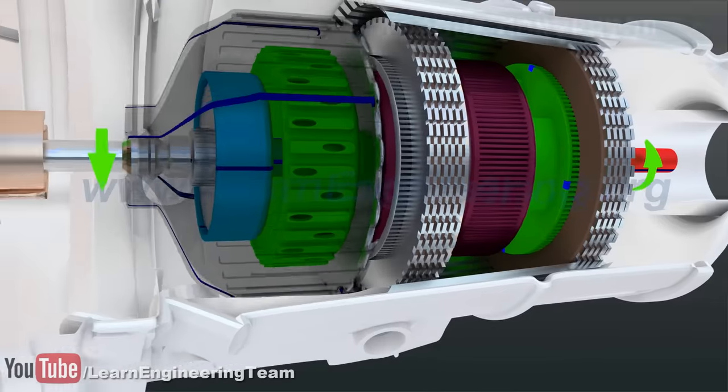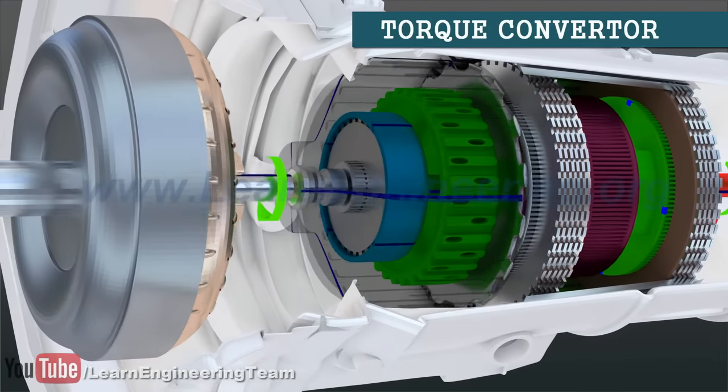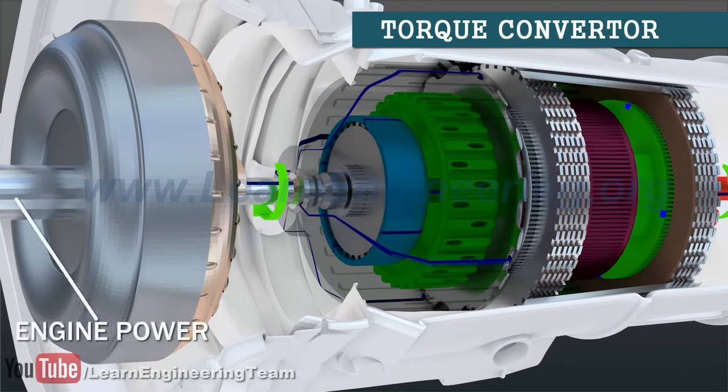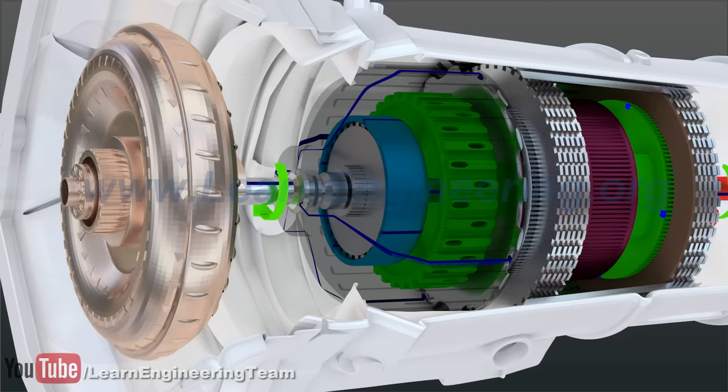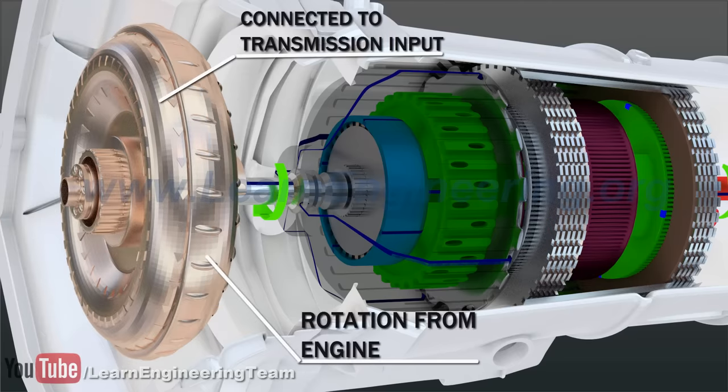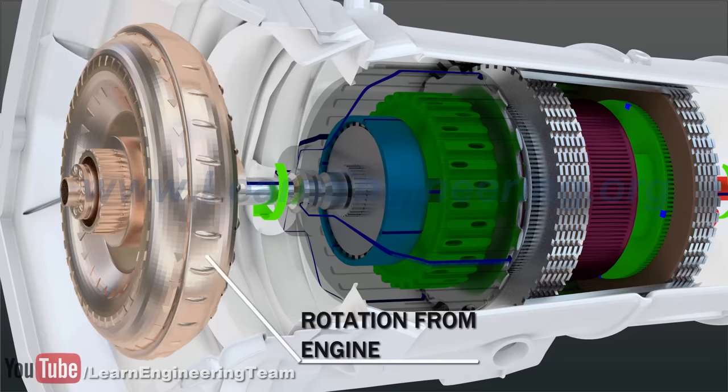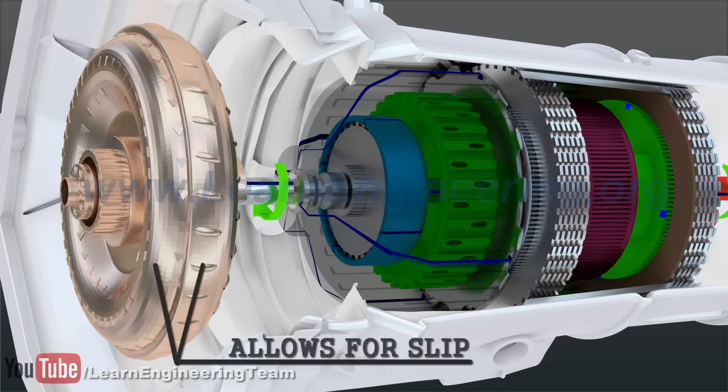Unlike manual transmissions, a torque converter is needed in the automatic transmissions. When the transmission is in gear and we apply the brakes, we have to isolate the rotation of the engine from the transmission. With a fluid coupling, the torque converter will help accomplish this.